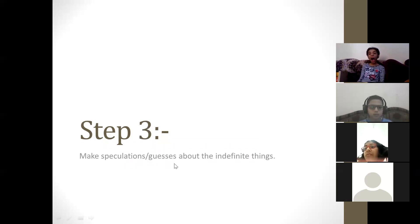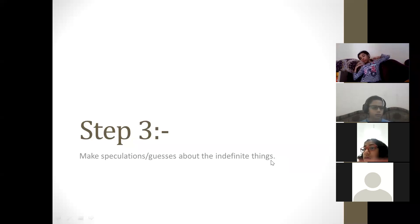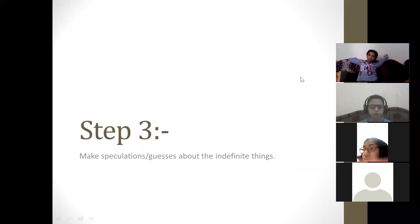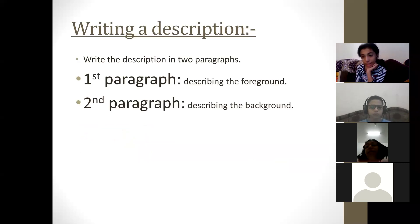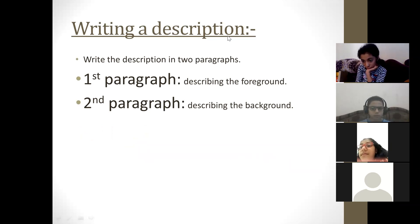In the third step, you may make speculations or guesses about indefinite things. Sometimes things are not quite visible to you, or they are indefinite and you are not quite sure about them, so you may make speculations or guesses about such things. This is called making speculations about the indefinite things while describing the picture.